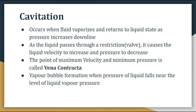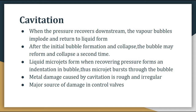Vapor bubble formation occurs when the pressure of the liquid falls near the level of liquid vapor pressure — this is known as cavitation. When the pressure recovers downstream, the vapor bubbles implode and return to liquid form. After the initial bubble formation and collapse, the bubble may reform and collapse a second time. Liquid micro jets form when the recovering pressure forms an indentation in the bubble, and the micro jets burst through the bubble. After bubble formation, metal damage occurs.